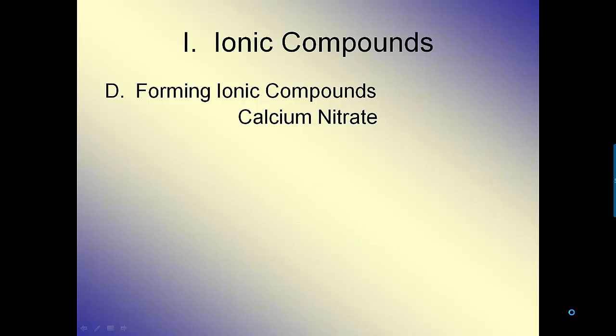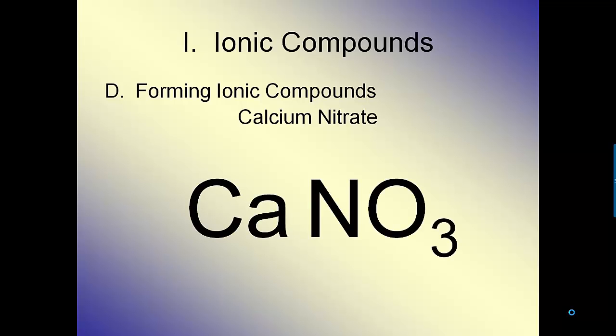That's great when you're dealing with what are called binary compounds, meaning there's only two elements involved, like Na and Cl, or Sr and N. But what happens if you have something from the right-hand side, which is actually a polyatomic? Poly meaning more than one atom. Here's the case of nitrate. You have Ca, calcium, which is a plus two charge. You have nitrate, which has a minus one charge.